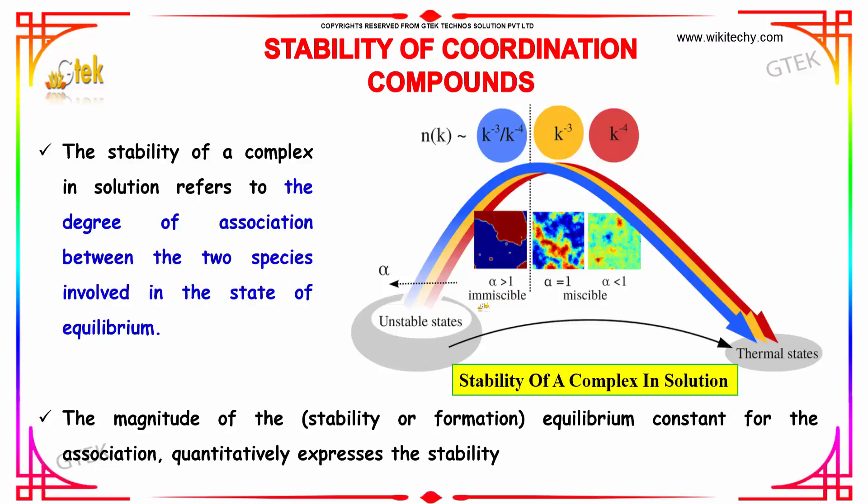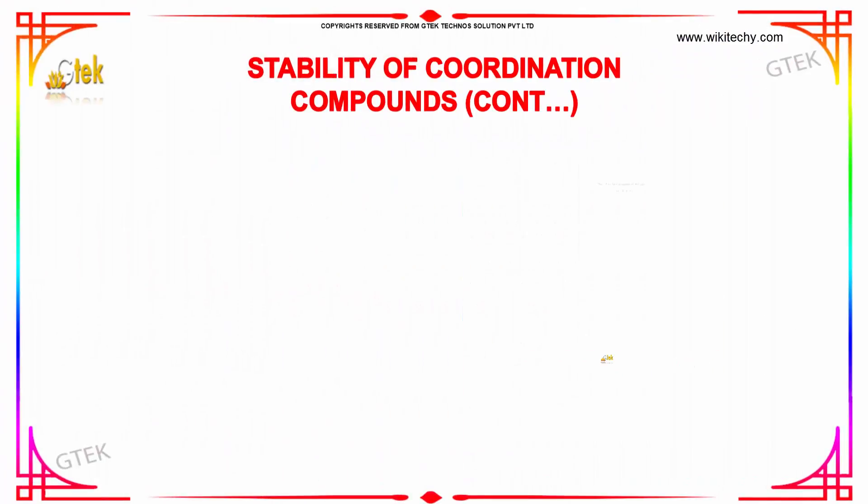If alpha is greater than 1, it is immiscible. And alpha equal to 1 and alpha less than 1, it is miscible. This is thermal state. From unstable states, it will go to thermal states. That is measured in alpha.